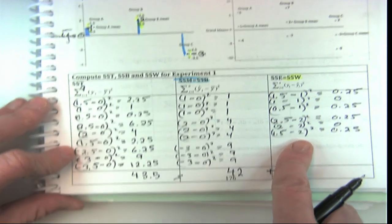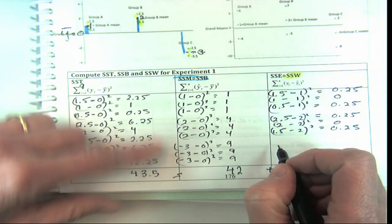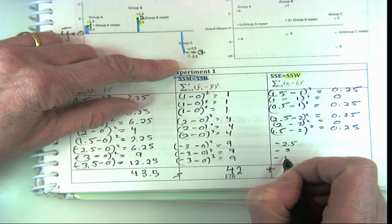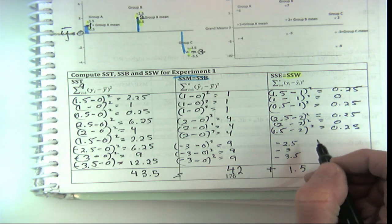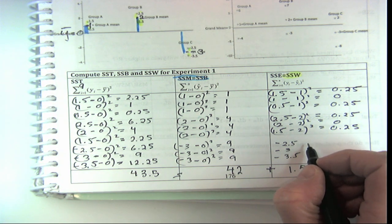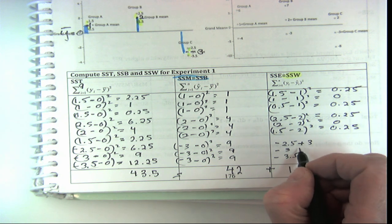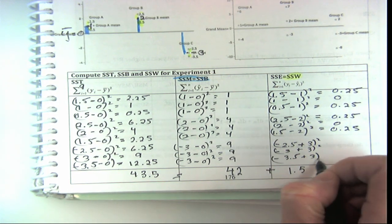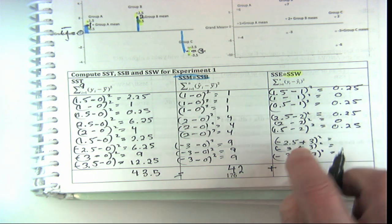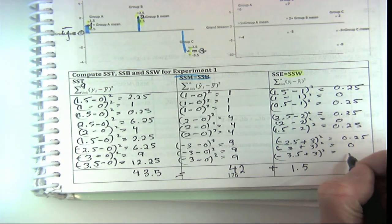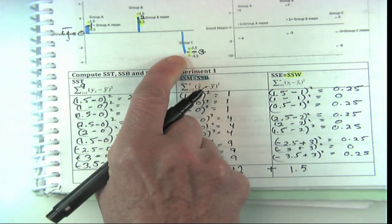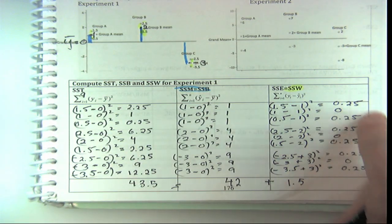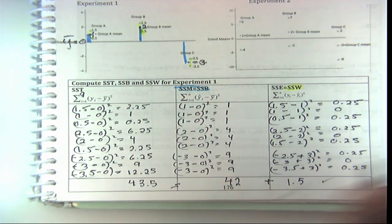For group C: −2.5 − (−3) = 0.5, squared = 0.25; −3 − (−3) = 0; −3.5 − (−3) = −0.5, squared = 0.25. We have 6 × 0.25 = 1.5 for SSW, which checks out perfectly. So SSB + SSW = 42 + 1.5 = 43.5 = SST. That worked out great.